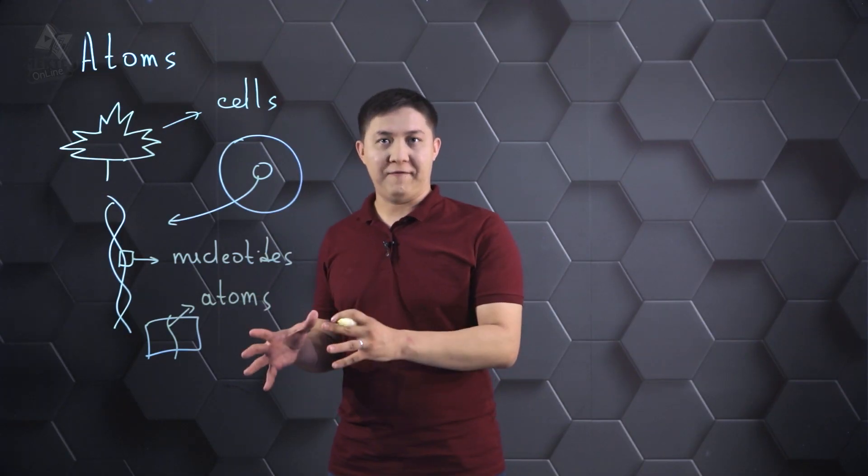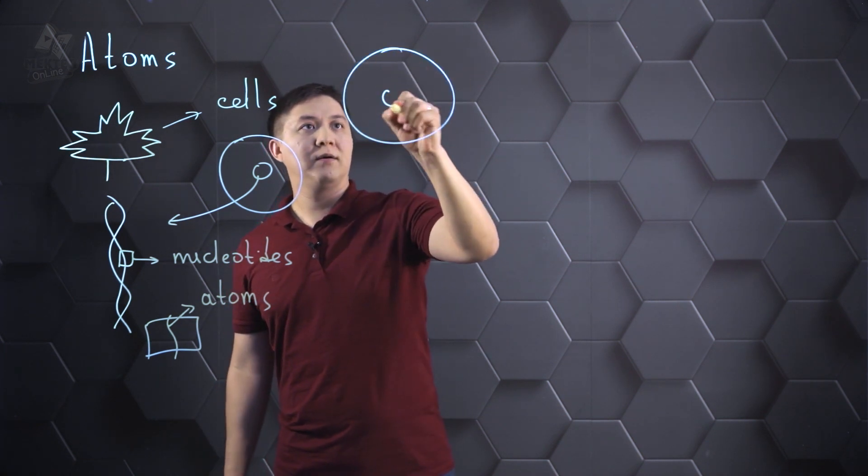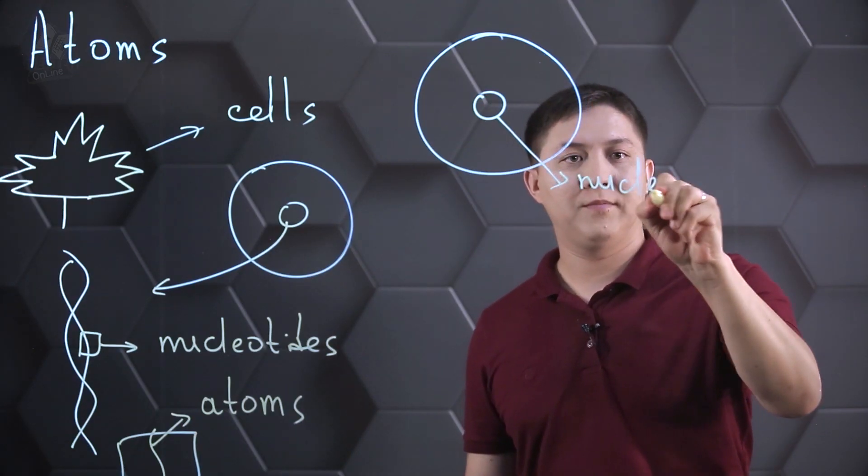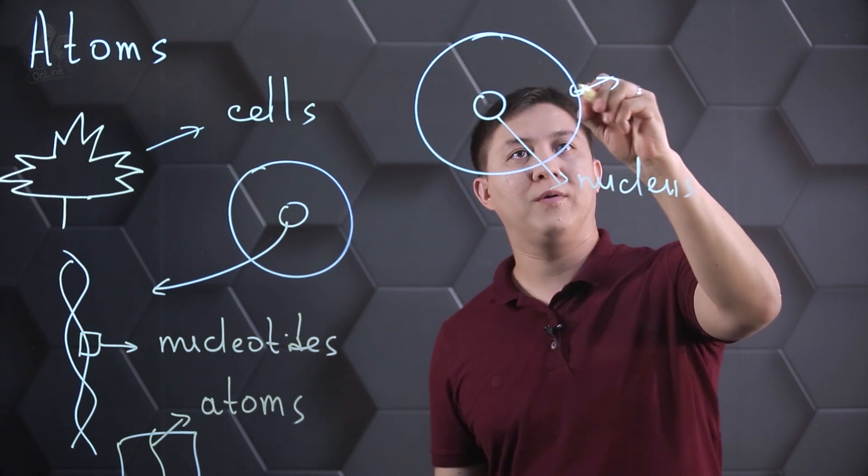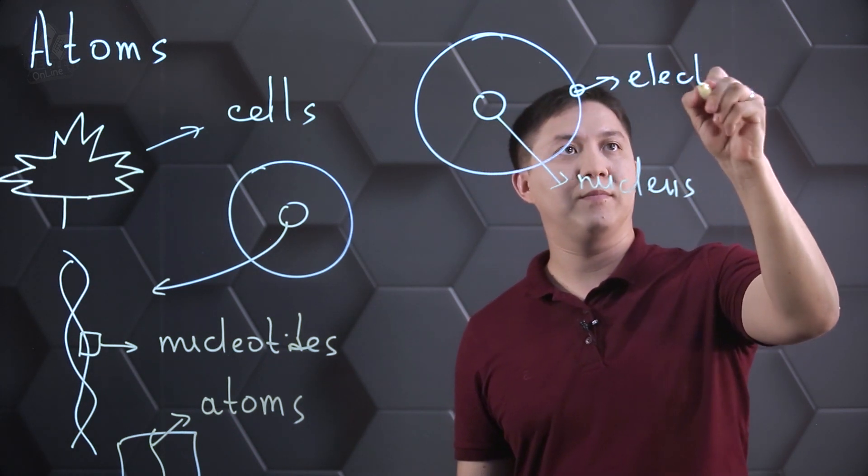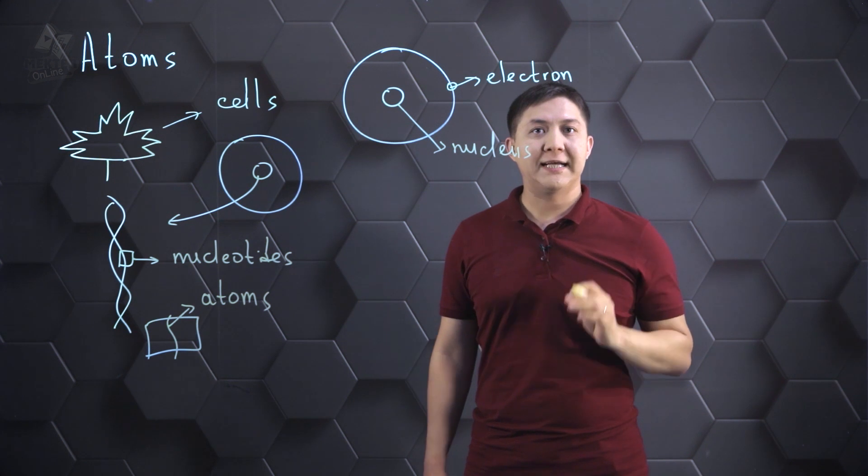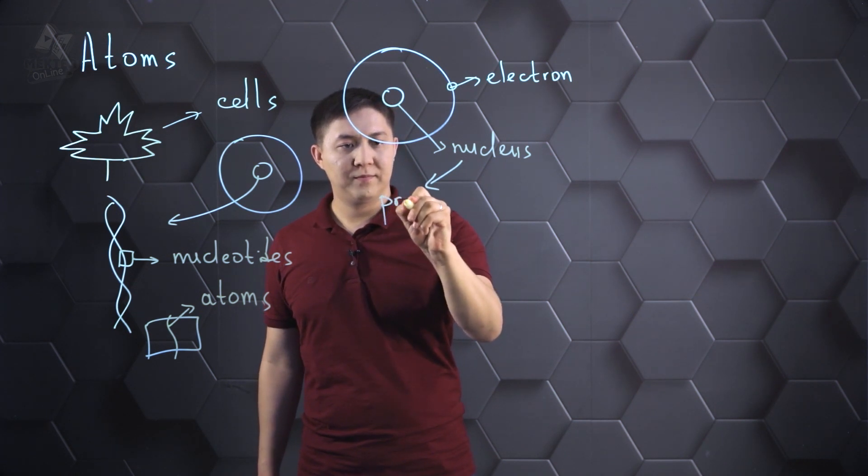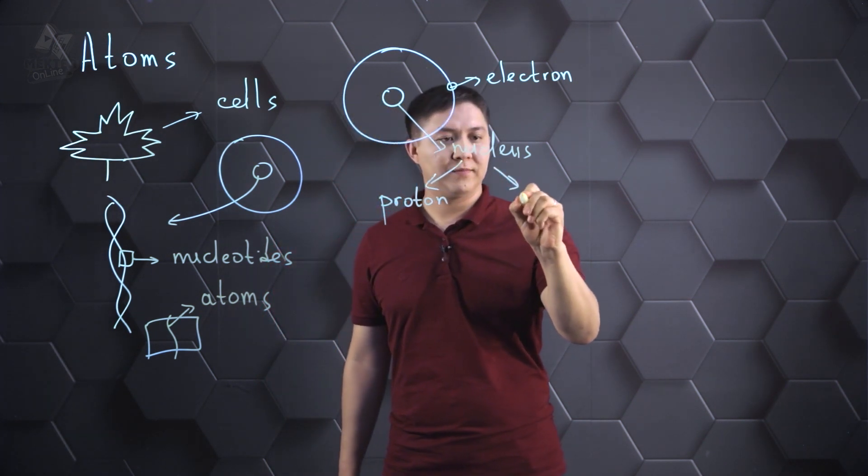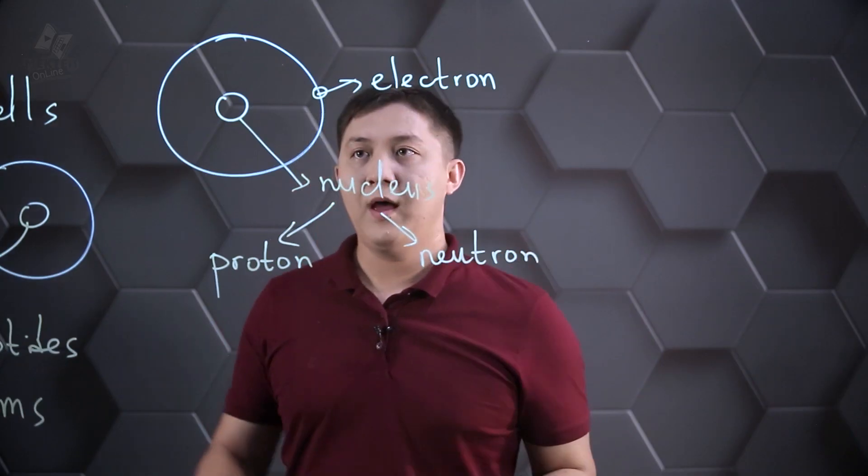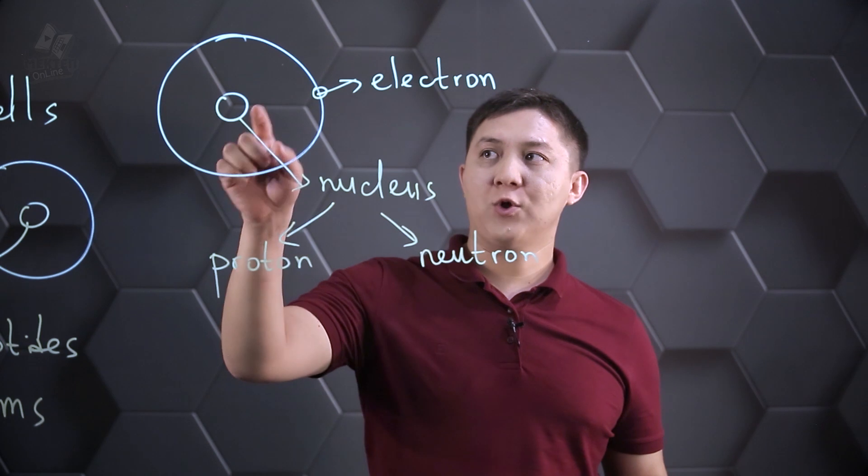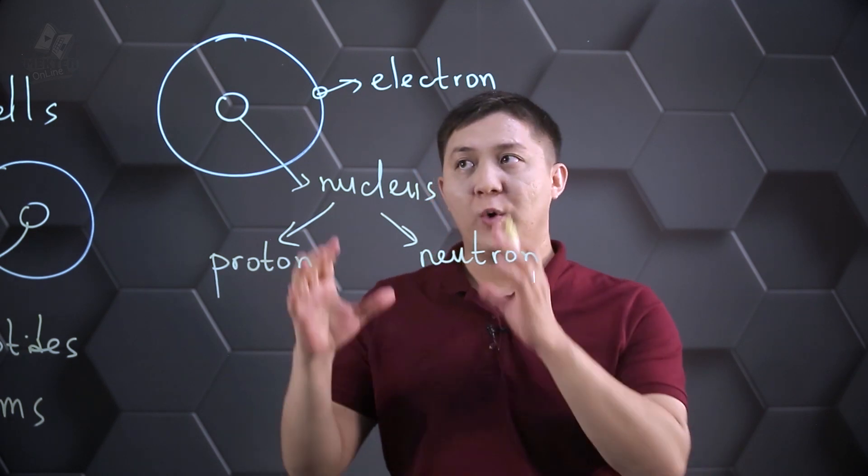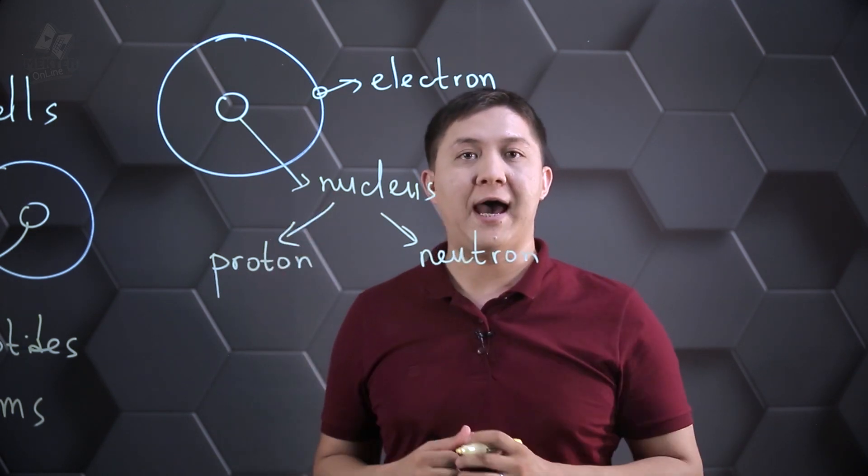Now, if we look inside of an atom, it has two main parts: nucleus and electron. Nucleus consists of two subatomic particles called proton and neutron. As you can see, nucleus is located in the center of the atom. An electron is moving around the nucleus. So, this is the structure of an atom.